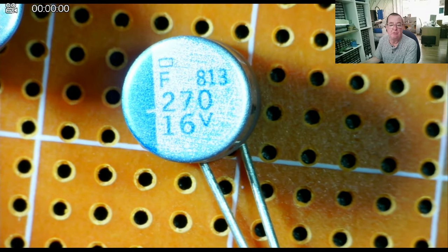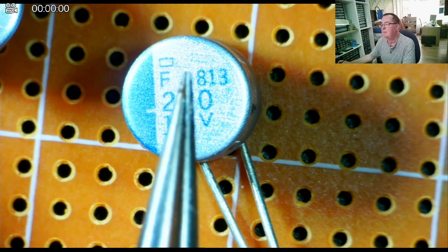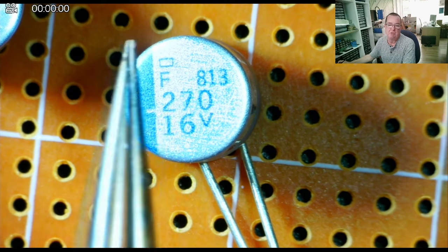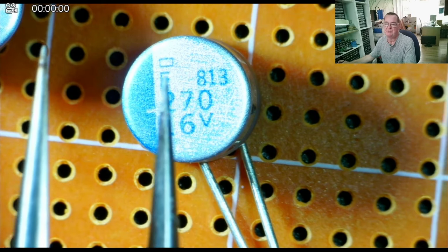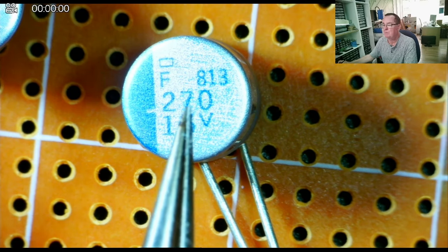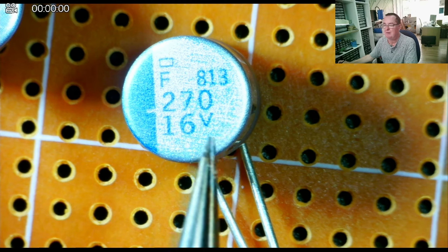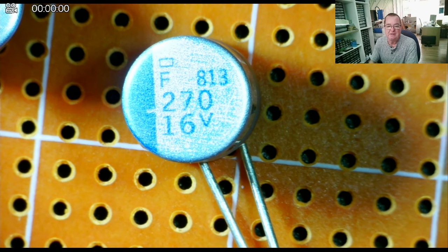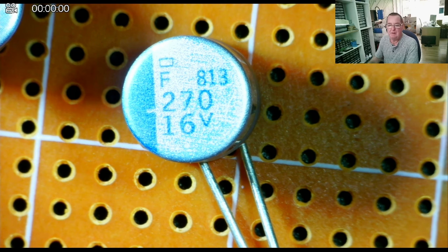And we have another one. So this one, again, the F logo is the manufacturer. I don't actually know who that is. 813 is the series again. 270 microfarad, 16 volts. And these are typical of the markings you will find on these type of polymer or solid electrolytic capacitors.